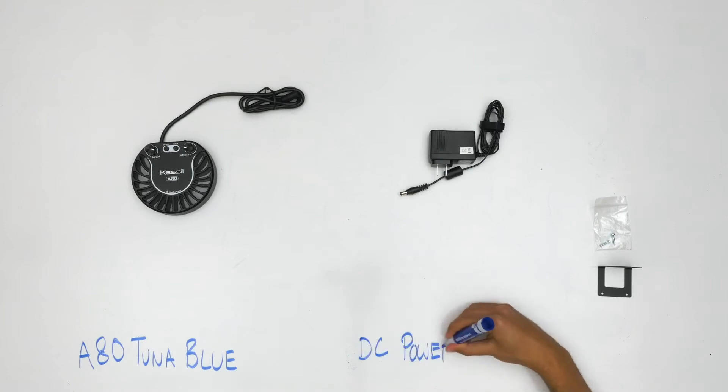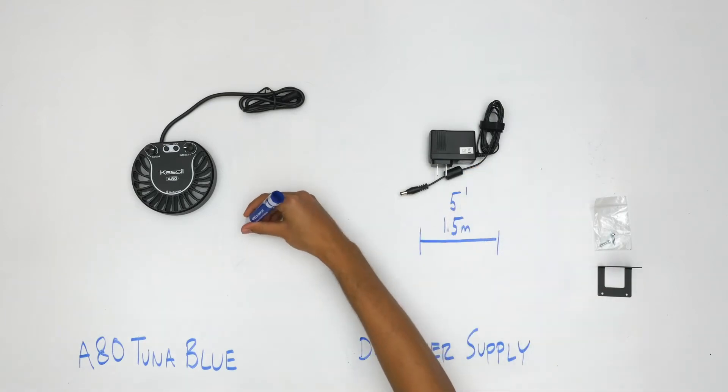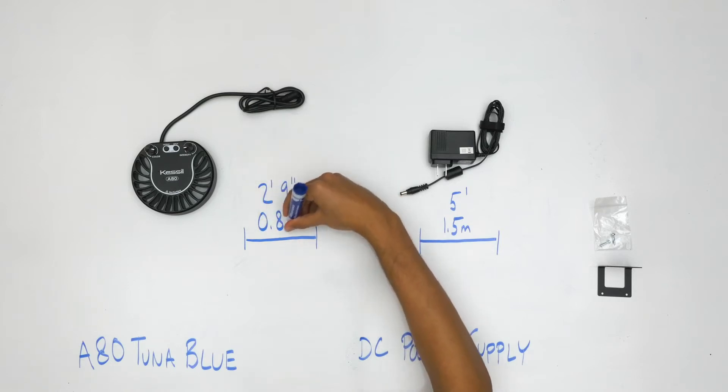The DC power supply, which is 5 feet long, connects the A80 to a power source. Combined with the power cord on the light, which is 2 feet 9 inches long, the total cable length is approximately 7 feet 9 inches.